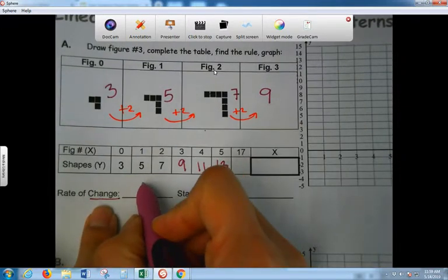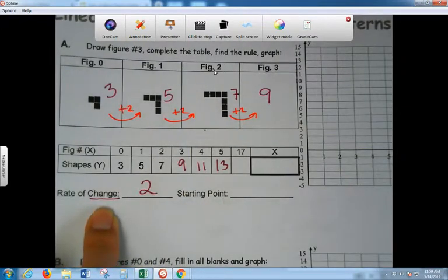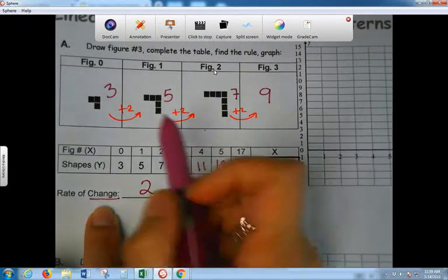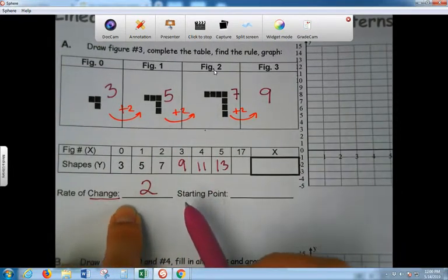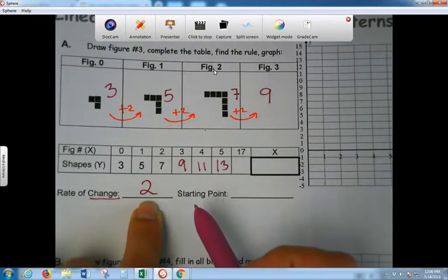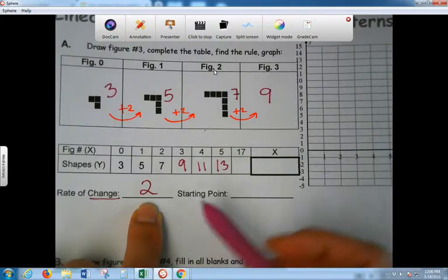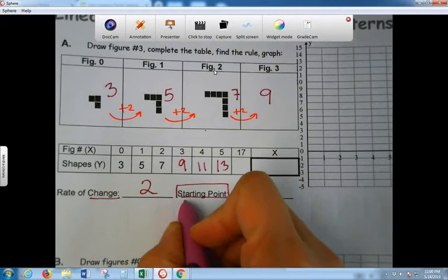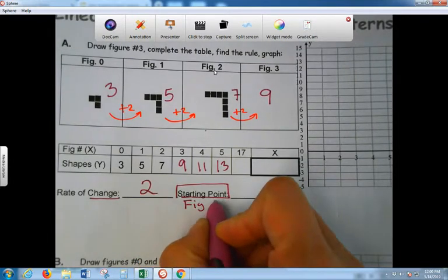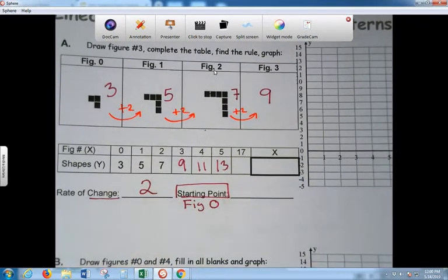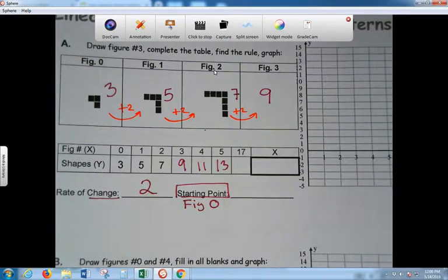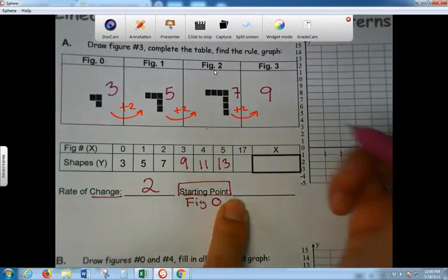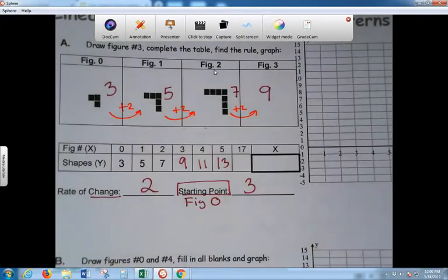Very good. I am changing by 2. Each time I'm going up 2. So I change by 2. Okay? We're okay? Starting point. Starting point is figure 0. What number, how many did I start with at figure 0?